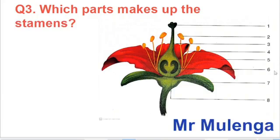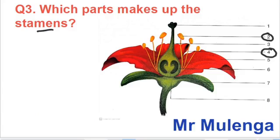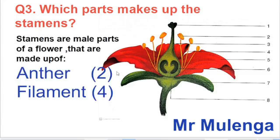Question three asks: which parts make up the stamens? The stamens are the male parts of the flower and are made up of the anther (part two) and the filament (part four). The anther and the filament together make up the male parts of the flower that we call the stamens.